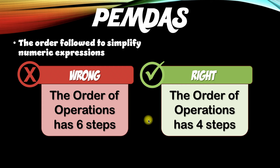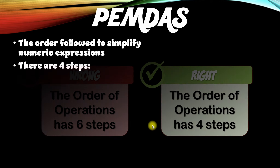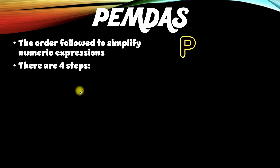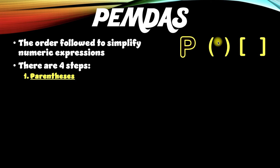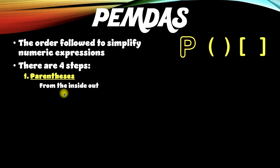Step one is the letter P, which stands for parentheses. Those parentheses look like this. Sometimes you'll see them as brackets, and that normally happens when you have one set of parentheses inside another set of parentheses. When that happens, you work from the inside parentheses towards the outside.